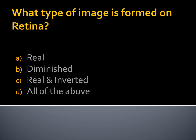What type of image is formed on the retina? Option A, real. Option B, diminished. Option C, real and inverted. Option D, all of the above. The image formed on the retina is real and inverted, and then it goes through the optic nerves to transfer the message to the brain. So the answer is real and inverted.